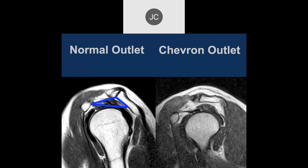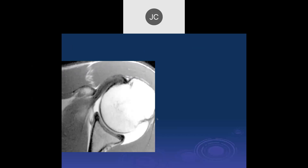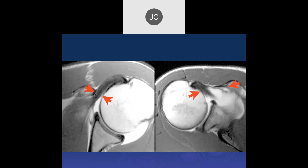A normal triangle is seen between the coracoid process, AC joint, and humeral head. With inferior coracoid positioning the chevron sign is visible. On axial images, the minimum distance between the coracoid process and the humeral head should be more than 7 mm — less than that is abnormal. This narrowing can occur from an inferiorly positioned coracoid with a positive chevron sign, or from superior migration of the humeral head.